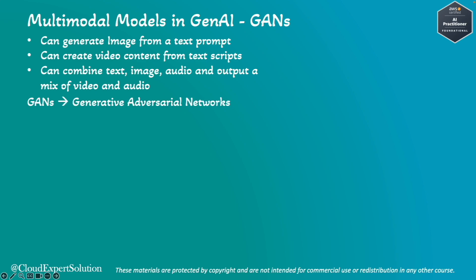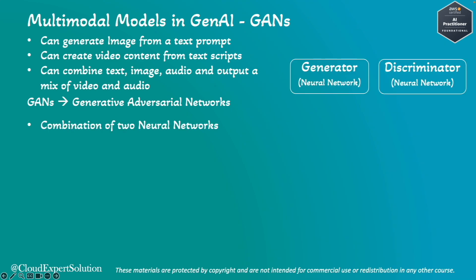GAN is one of the multimodal models available in the market. As explained with the artist example, GAN is a combination of two neural networks: one is the Generator and the other is the Discriminator. The Generator creates new data instances — just like an artist creating realistic paintings — while the Discriminator evaluates the data, like an art critic who judges whether the paintings are real or fake.